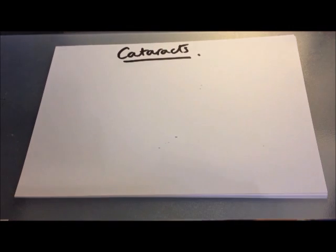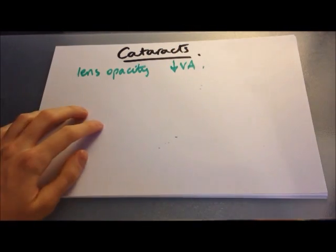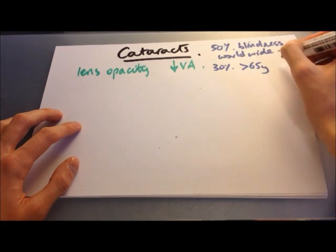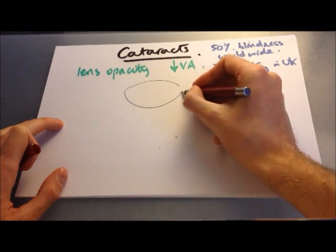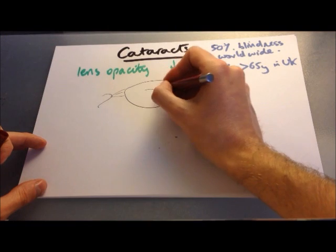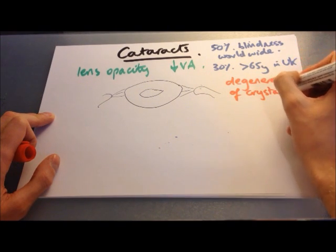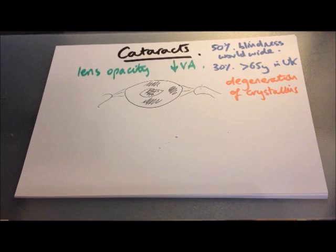Next, we'll look at cataracts. A cataract is an opacity of the lens of the eye leading to reduced visual acuity. Age-related cataracts cause 50% of cases of worldwide blindness, and 30% of people aged 65 or over in the UK have at least one cataract causing some visual impairment. Cataracts are due to degeneration of crystallins — normally transparent proteins within the lens fibres. They can occur as nuclear sclerosis cataracts in the nucleus, cortical cataracts in the cortex, or posterior subcapsular cataracts in the posterior aspect of the lens.